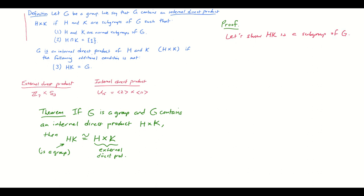To do that, let's show it satisfies the closure property and the inverse property and also has the identity. The fact that it has the identity is not going to be too bad. We know HK has the identity, since we can always write the identity of G as the identity of G times the identity of G, and that belongs to H and that belongs to K, so this belongs to HK.